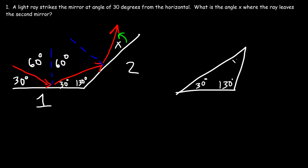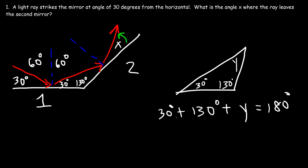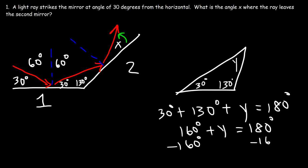The three angles of a triangle must add to 180. So what is this missing angle, which we'll call y? Well, 30 plus 130 plus y equals 180. Now 30 plus 130 is 160, so we subtract 160 from both sides: 180 minus 160 is 20. So that's the missing angle.